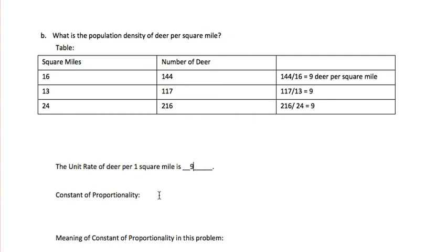Our unit rate is the constant of proportionality. So we can now say that the constant of proportionality is 9, meaning that the relationship between square miles and number of deer is multiplying by 9.